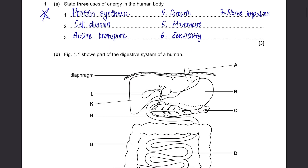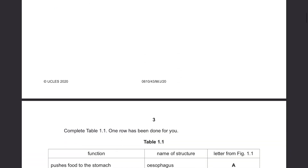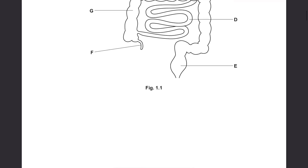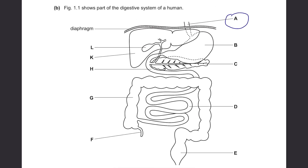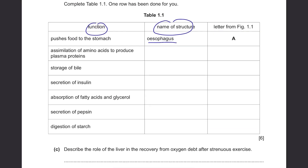Part B. Figure 1.1 shows part of the digestive system of a human. Complete Table 1.1 — one row has been done for you. We have the function, name of structure, and letter from Figure 1.1. The one that pushes food to the stomach is the esophagus — it's A. Then the assimilation of amino acids to produce plasma proteins requires you to know all the functions and names of the structures of the digestive system.